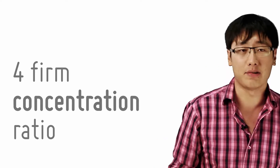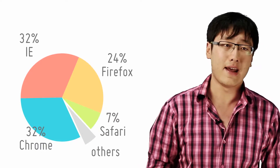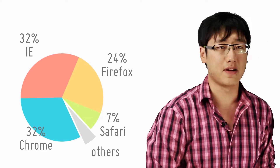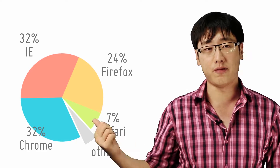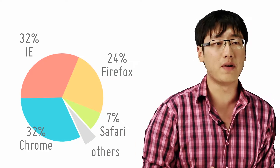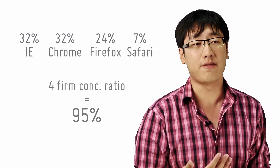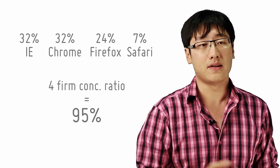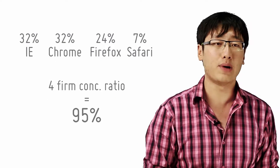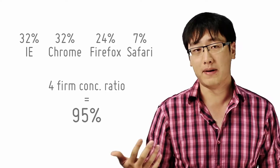Say we look at internet browsers. Google Chrome takes up 32%, Internet Explorer takes up another 32%, Firefox 24%, Safari 7%. So in total, the four-firm concentration ratio is 95%. You can see that four systems dominate the browser market and it's pretty oligopolistic.